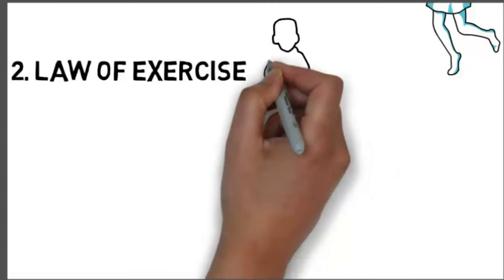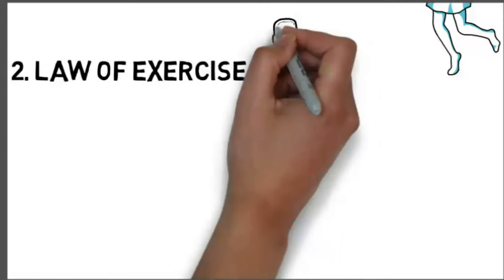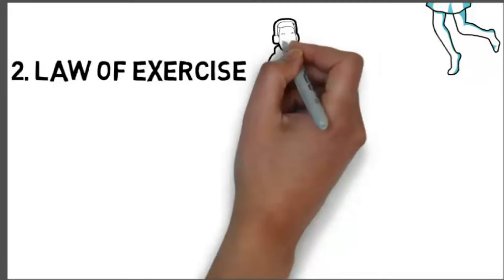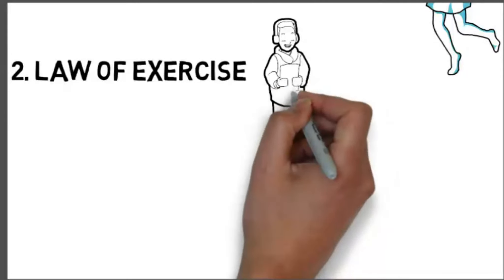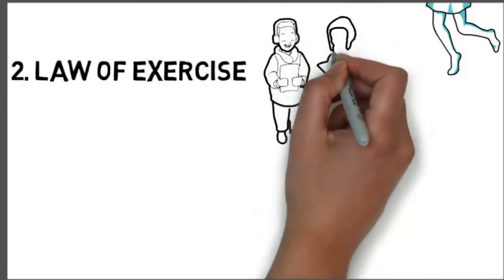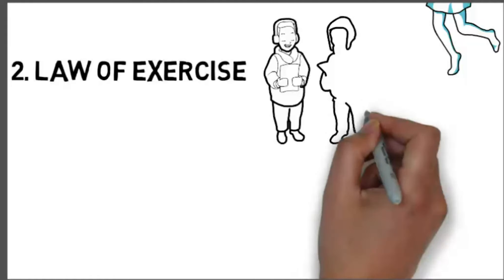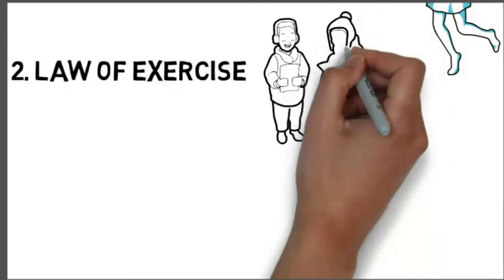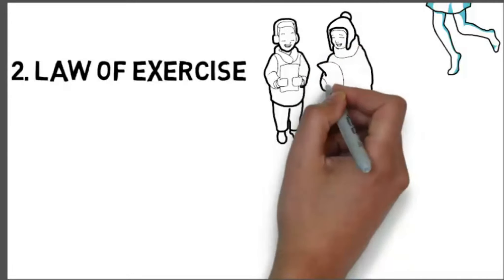Regarding the law of disuse, it is said that when a modifiable connection is not made between a stimulus and response over a length of time, the strength of that connection is decreased. This means that any act that is not practiced for some time gradually decays. Anything that is not used, exercised, or practiced for a certain period tends to be forgotten, or becomes weak in strength, efficiency, and promptness.